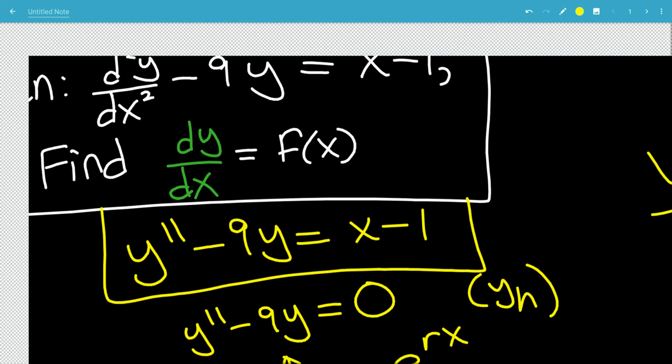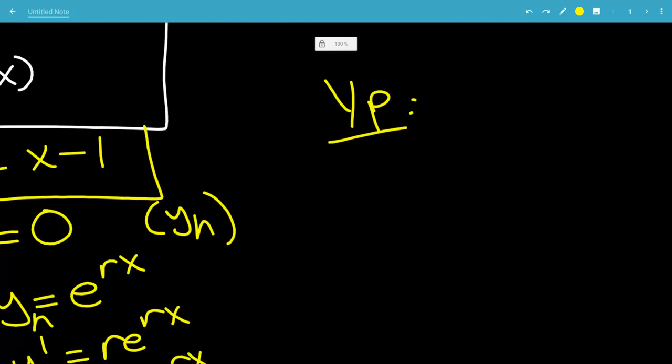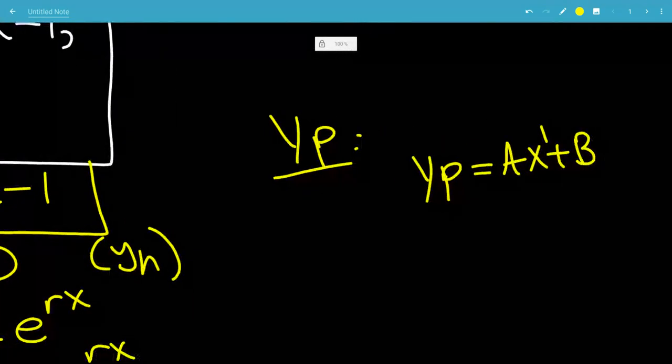We have an x minus 1 on the right-hand side, which means we want to guess that yp is ax plus b, because it's x to the first power is the highest power.